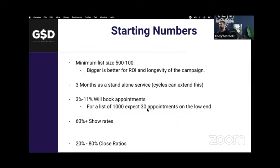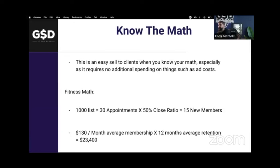You can get 3% to 11% of them to book appointments — the range is wide because it truly depends on whether it's a warm list, how old the leads are, and when they were last contacted. Expect a 60% show rate. And here's my favorite part: 20% to 80% closing ratios, because these are warm leads from the past being hit with a direct offer — they should be much easier to close. All it requires is no additional ad spending.